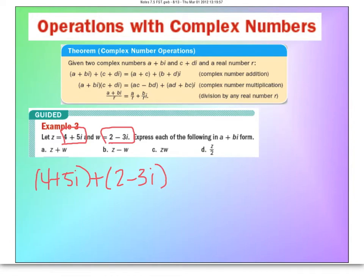And all you have to do is add your like terms. So we have two real numbers here, so 4 and 2 is 6, and then we have two imaginaries, a 5i and negative 3i. And you just add those together like they're variables. So the real number is 6, 5i minus 3i is 2i.